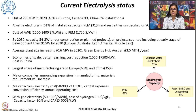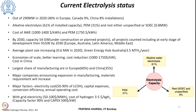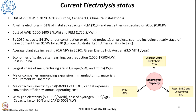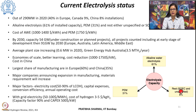Currently, only about 0.03% of global hydrogen is produced using water electrolysis. Of the 290 megawatt of electrolysis capacity installed globally in 2020, 40% was in Europe, 9% in Canada, and 8% in China. Of this 290 MW, alkaline water electrolysis accounted for 61% of electrolytic hydrogen production, PEM electrolyzer accounted for 31%, and the rest were unspecified or solid oxide electrolytic (SOEC) units.